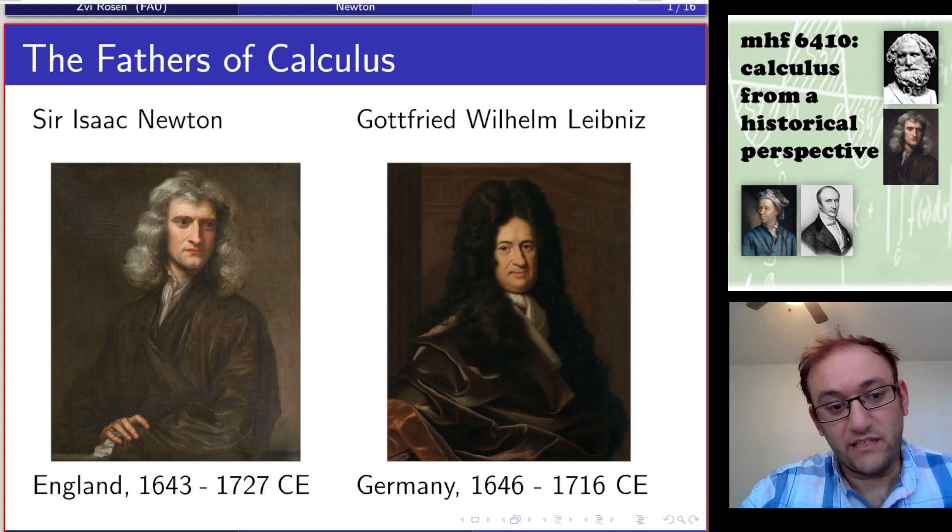Sir Isaac Newton was working in England. He lived from 1643 to 1727. And Leibniz lived in Germany between 1646 and 1716. They were very active in the second half of the 17th centuries.